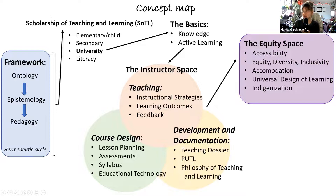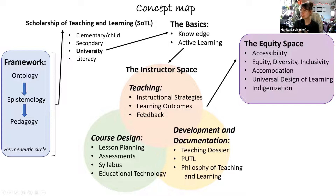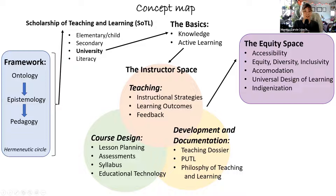I want to give you a framework for interpreting these new concepts. First, the hermeneutic circle: the more you understand about the big picture, the more you'll understand the little components, and vice versa. The more we understand about learning outcomes, the more we'll understand the instructor space and teaching and learning overall. You might not get the whole picture right away, but understanding little bits helps you understand the bigger part.